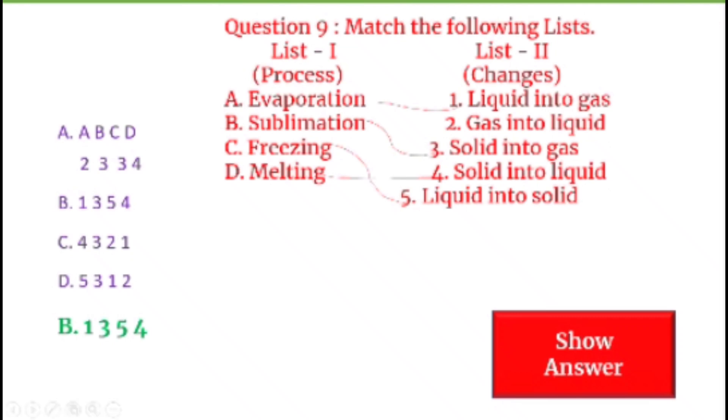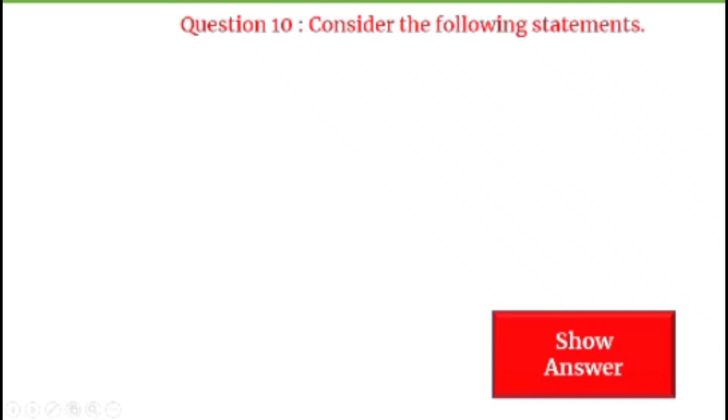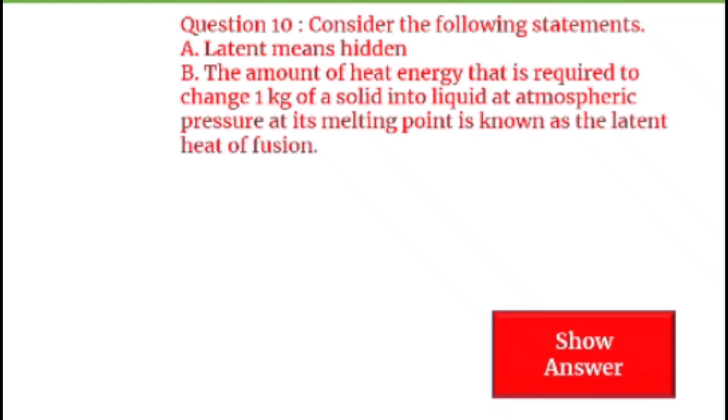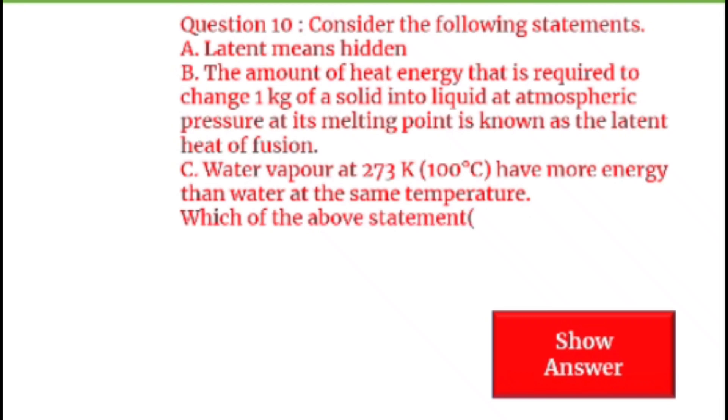Next question on your screen, question number 10. Consider the following statements. A: Latent means hidden. B: The amount of heat energy that is required to change 1 kg of a solid into liquid at atmospheric pressure at its melting point is known as the latent heat of fusion. C: Water vapor at 273 Kelvin, that is 100 degree Celsius, have more energy than water at the same temperature. We have three options. Which of the above statements is or are correct? Let's see the options. A: Only A. B: A and B. C: B and C. D: All of these. Let's see, what would be the answer of this question? Well, all of these are correct. These statements, these properties are contained by latent heat.